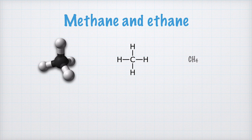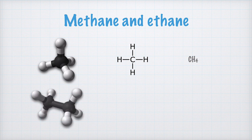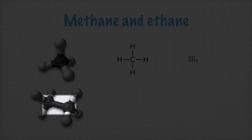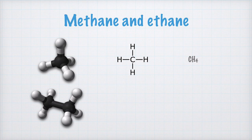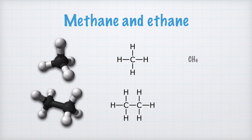Two carbon atoms may also bind to each other with a covalent bond. This is what happens in an ethane molecule, of which you can see a model here. There is a covalent bond between the two carbon atoms, and three hydrogen atoms bound to each carbon atom. Because of this, we can write the structure of ethane like this. We can also count all the carbon and hydrogen atoms and arrive at the molecular formula C2H6.